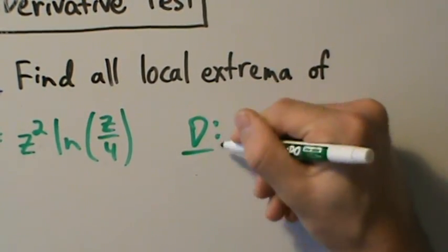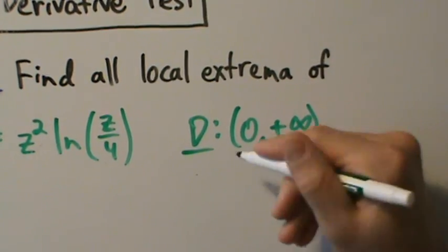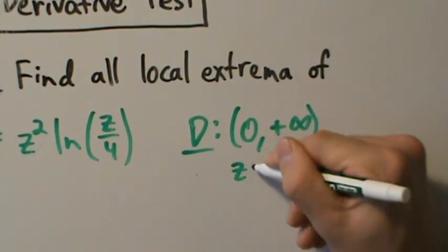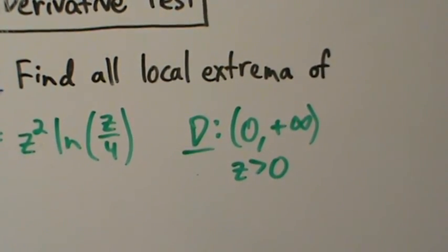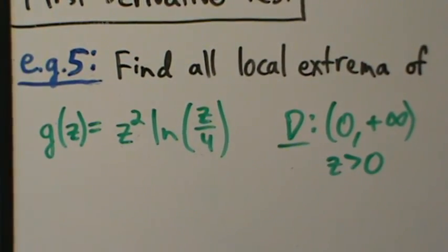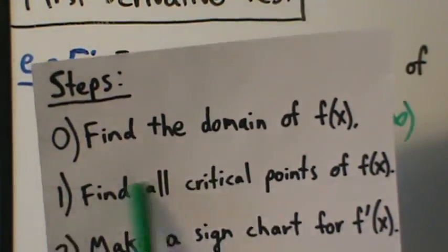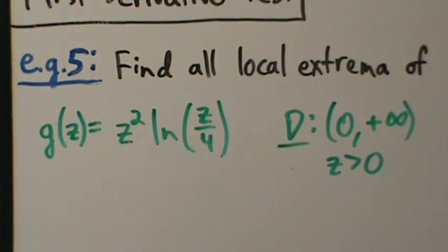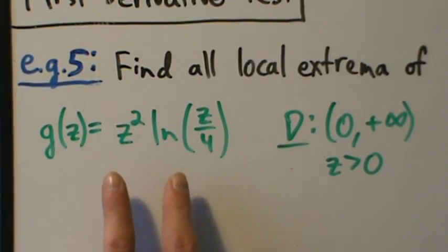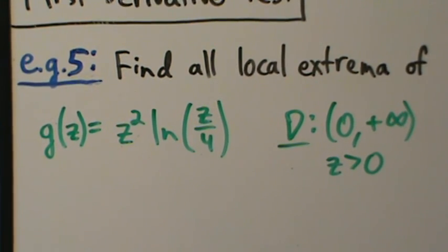The domain D is the interval from 0 to positive infinity — in other words, z has to be strictly greater than 0. That's step 0. Step 1 is to find all the critical points of the function. To find critical points, we take the derivative and find where the derivative is 0 and where the derivative is undefined.